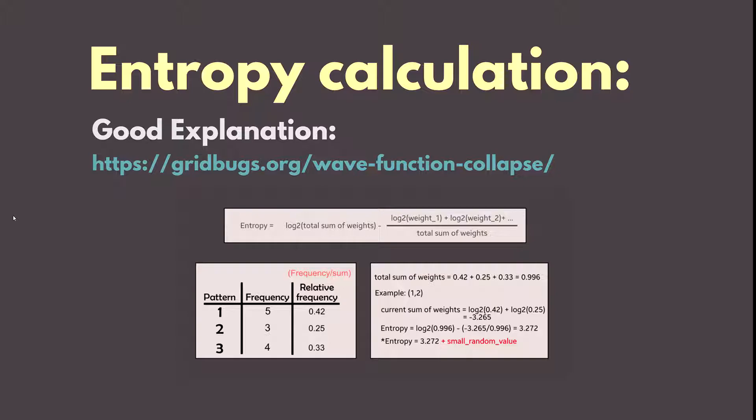So the higher the chance that we will be correct if we choose to collapse a lowest entropy cell. I suggest you go to the link posted in the slide for more professional explanation of what entropy is. There is a section about entropy and how it derives from probability.